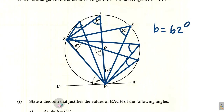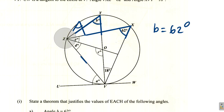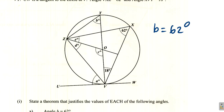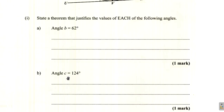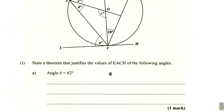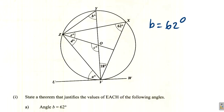For part 1B, angle C — the angle at the center — is said to be 124 degrees. How do we justify that?